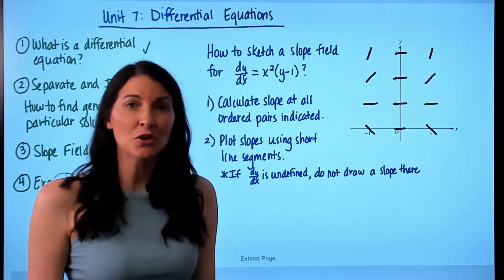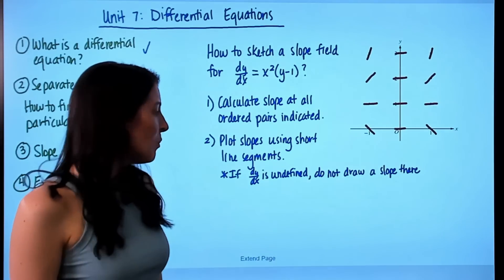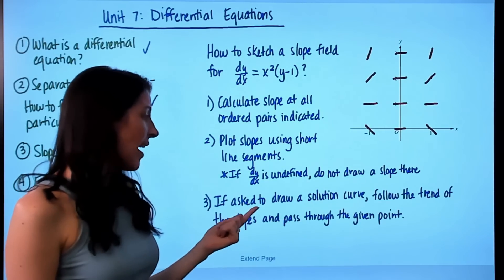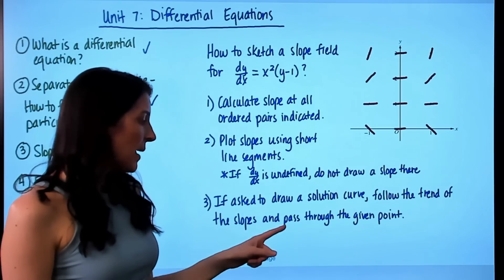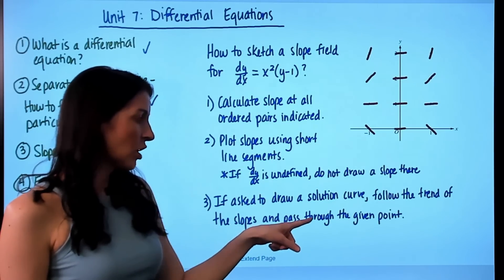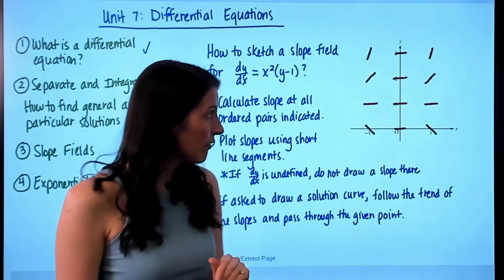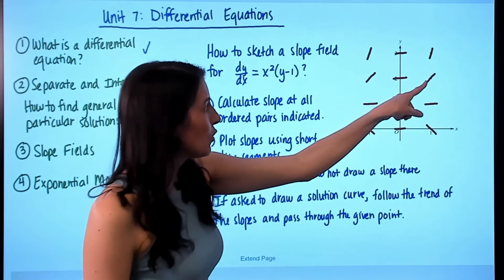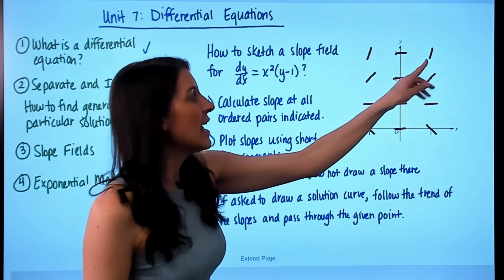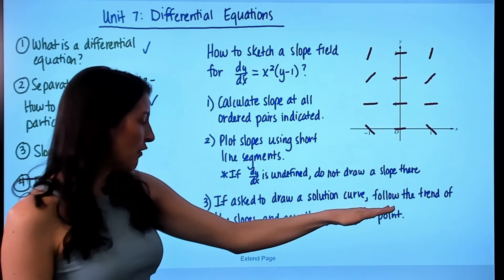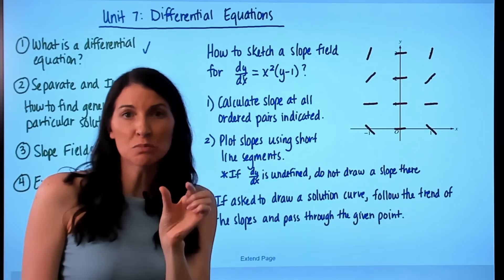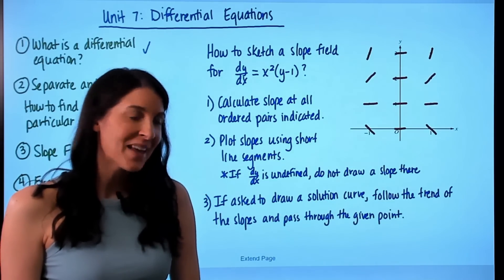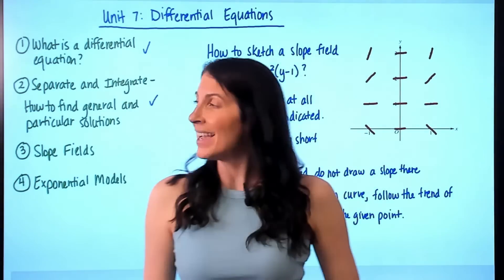Oftentimes, after you sketch a slope field, you will be asked to draw a solution curve. If asked, make sure the solution curve passes through the given point — for example, (1, 2) — and then follow the trend of those small tangent line segments you drew on the graph. That's how you draw a slope field.